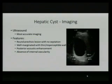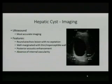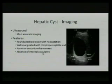For imaging, the first modality to consider is ultrasound — that's actually the most accurate imaging for a cyst. If the cyst is simple with classic features on ultrasound, you probably won't need any additional imaging. Classic features include an anechoic lesion with no septations, well-marginated with a thin imperceptible wall, posterior acoustic enhancement, and absence of internal vascularity.